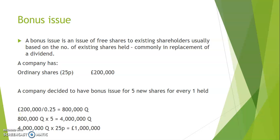The last type of share is a bonus issue. So we've been through ordinary shares, premium shares, and a rights issue — and the fourth is a bonus issue. A bonus issue is when a business issues free shares to existing shareholders, and one of the most common reasons for a business doing this is usually when they don't have enough profits to pay a dividend.